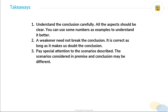Let's come to the takeaways. First, understand the conclusion carefully — all aspects should be clear. You can use some numbers as examples to understand it better. We used numbers, understood all aspects of the conclusion, and then proceeded to the pre-thinking part. Second, a weakener need not break the conclusion — it is correct as long as it makes us doubt the conclusion. It may not always break the conclusion; still, it may be correct. Third, pay special attention to the scenarios described — the scenarios considered in the premise and conclusion may be different.